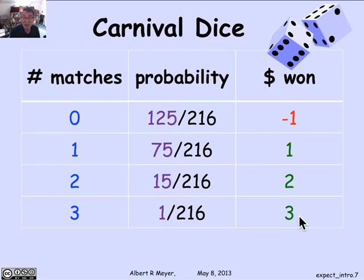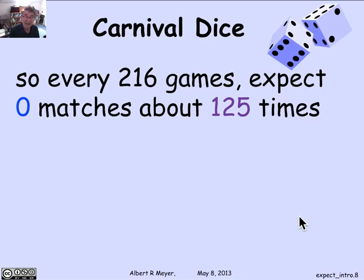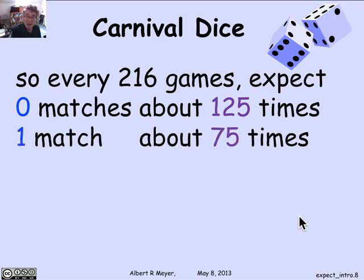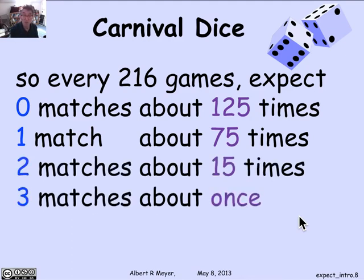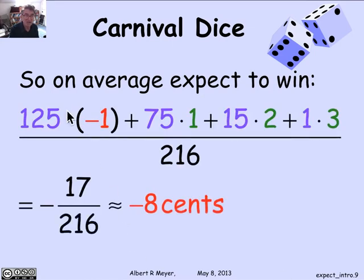Now I can ask: what do I expect to win? Suppose I play 216 games and the games split exactly according to these probabilities. Then I would expect zero matches about 125 times, one match about 75 times, two matches 15 times, and three matches once. So my average win is going to be [125×(−1) + 75×1 + 15×2 + 1×3] divided by 216.